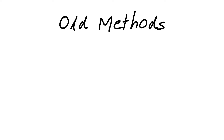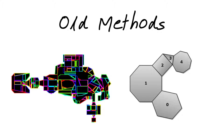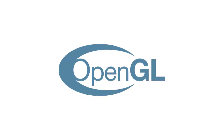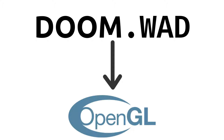The original Doom engine used a concept known as binary space partitioning to create all of the levels and render them, while some later games such as Duke Nukem 3D used a portal-based rendering technique. However, we are going to do something completely different — we are going to use fully 3D OpenGL, which means that we'll load a standard Doom WAD file and convert that into a number of OpenGL meshes that we can then draw using the graphics card.